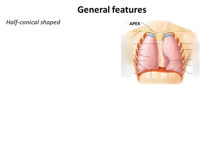The general features of the lungs: their shape is that of a cone or a half cone. The parts of the lung — we have the apex, which is blunt or rounded and is directed upwards or superiorly. It extends into the root of the neck. Posteriorly, it lies at the level of the neck of the first rib, whereas anteriorly it extends almost 2.5 cm above the level of the clavicle.